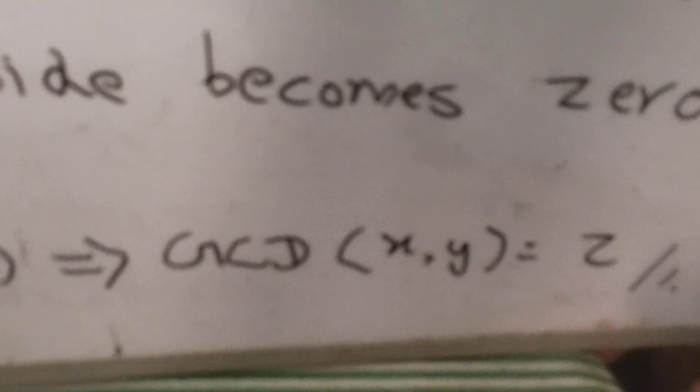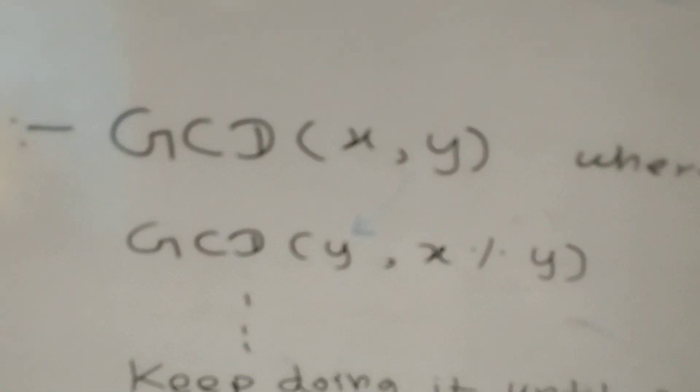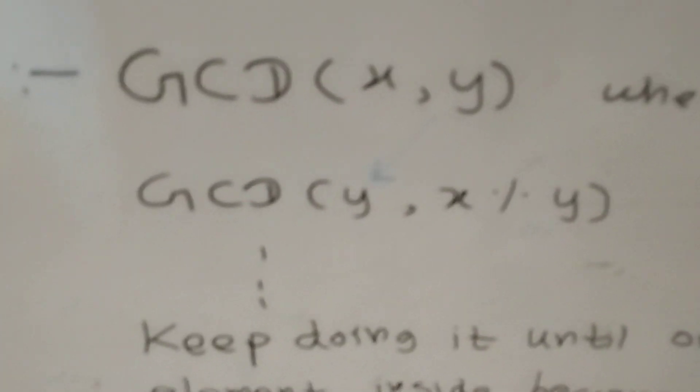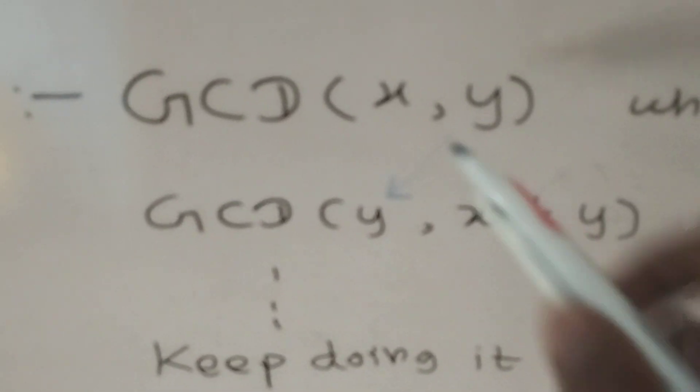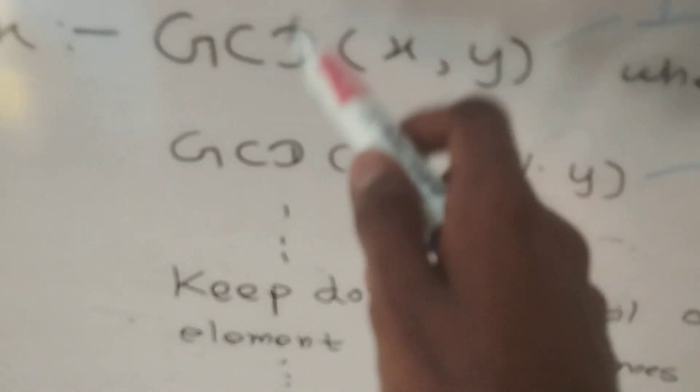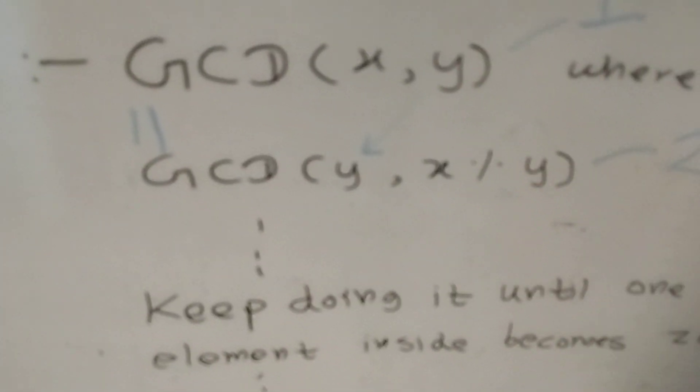It's a simple trick — if you do this for just one example, you'll never forget it. To recap: the first step is to put the bigger number first inside the GCD, with the smaller number second. The second step is to iteratively replace GCD(x, y) with GCD(y, x % y), which reduces the numbers while keeping the GCD value unchanged.